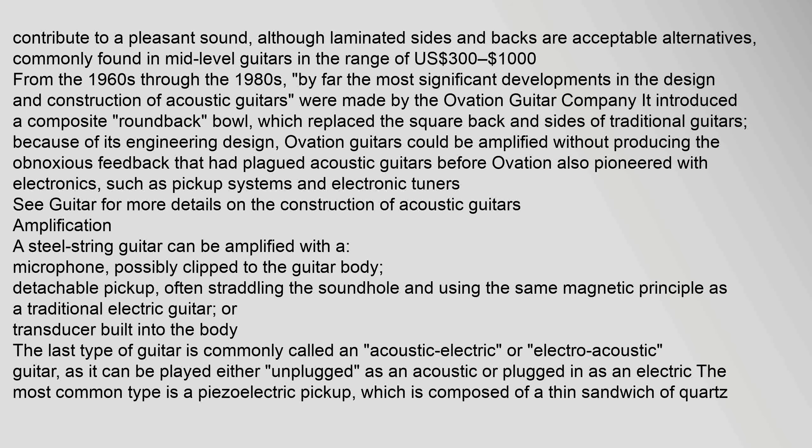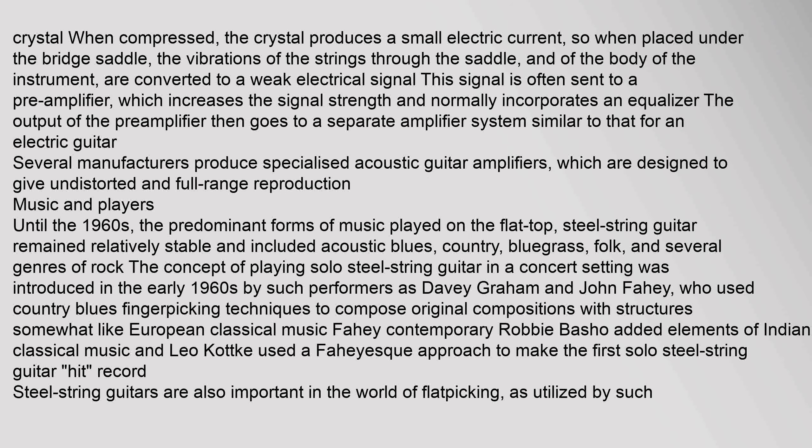Amplification: A steel string guitar can be amplified with a microphone, possibly clipped to the guitar body, a detachable pickup often straddling the sound hole and using the same magnetic principle as a traditional electric guitar, or a transducer built into the body. The last type is commonly called an acoustic electric guitar, as it can be played either unplugged as an acoustic or plugged in as an electric. The most common type is a piezoelectric pickup, composed of a thin sandwich of quartz crystal. When compressed, the crystal produces a small electric current, so when placed under the bridge saddle, the vibrations of the strings through the saddle and of the body are converted to a weak electrical signal. This signal is often sent to a pre-amplifier, which increases the signal strength and normally incorporates an equalizer. The output then goes to a separate amplifier system. Several manufacturers produce specialized acoustic guitar amplifiers designed to give undistorted and full-range reproduction.